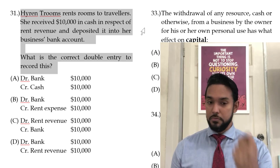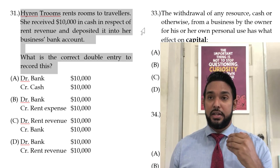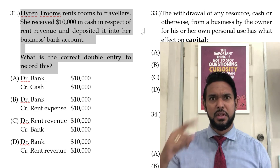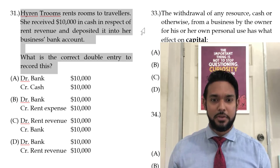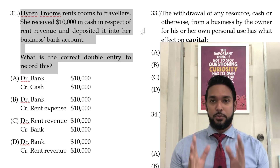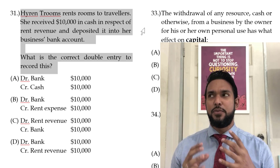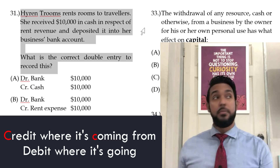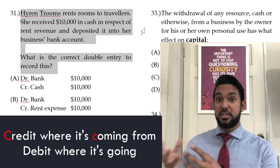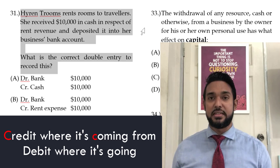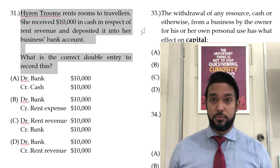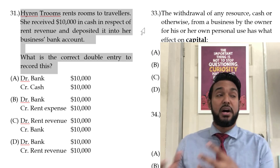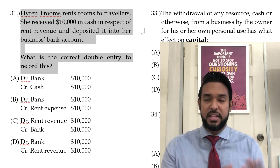If you know the answers, you can forward through the video. In my previous video, I gave you guys a little hack to help with double entry: credit where it's coming from, and debit where it's going. It is the value that is coming from one party or one place and going to somebody else.